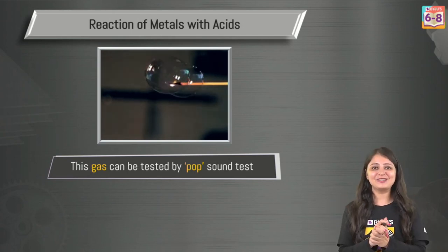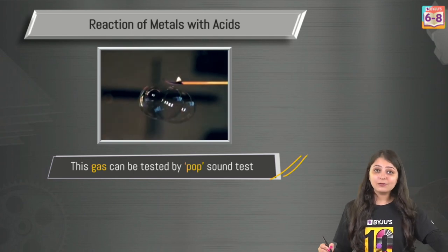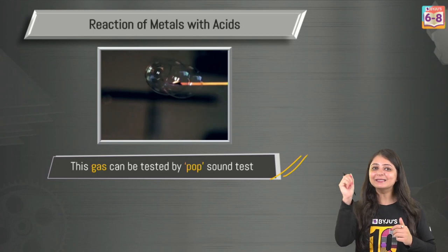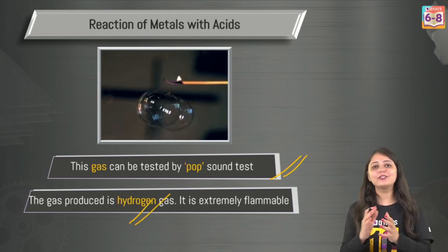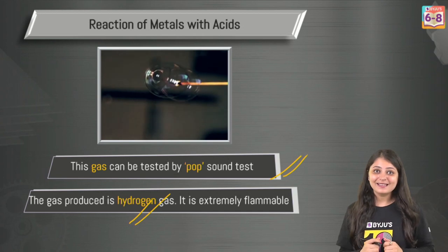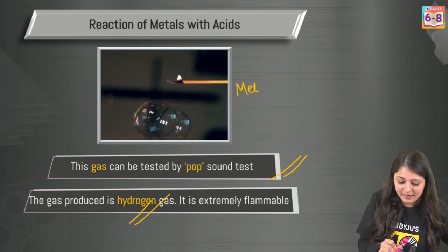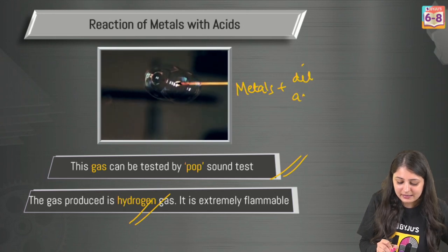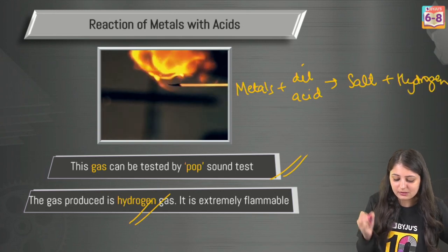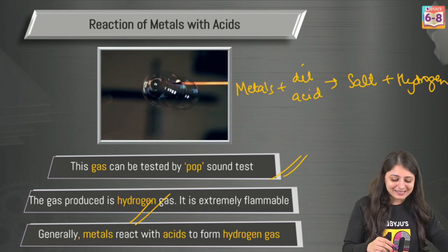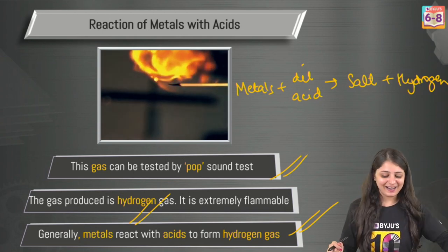In chemistry, we conveniently use the word 'generally.' This gas can actually be tested by a pop sound test. When a burning matchstick is brought near this gas, a pop sound is produced which tells us that the gas is hydrogen — a colourless, odourless, flammable gas which burns with a pop sound. So in general, metals react with dilute acid to give us salt plus hydrogen. That's how you check the presence of hydrogen. Metals generally produce hydrogen gas.